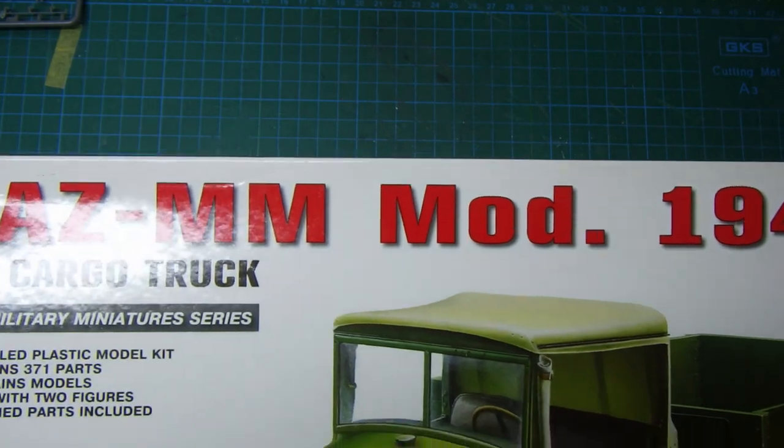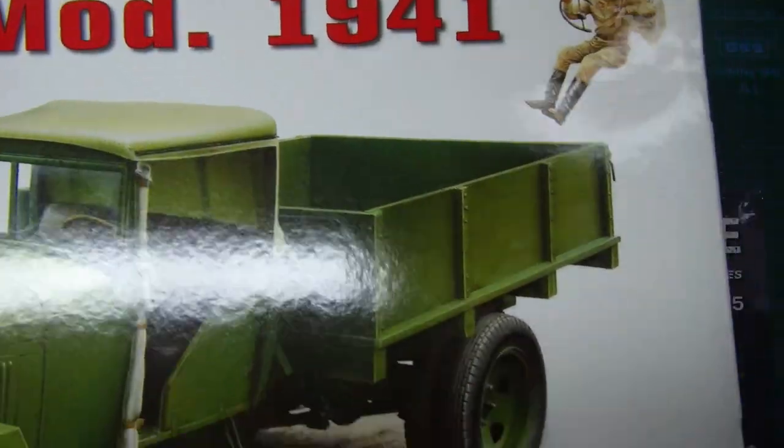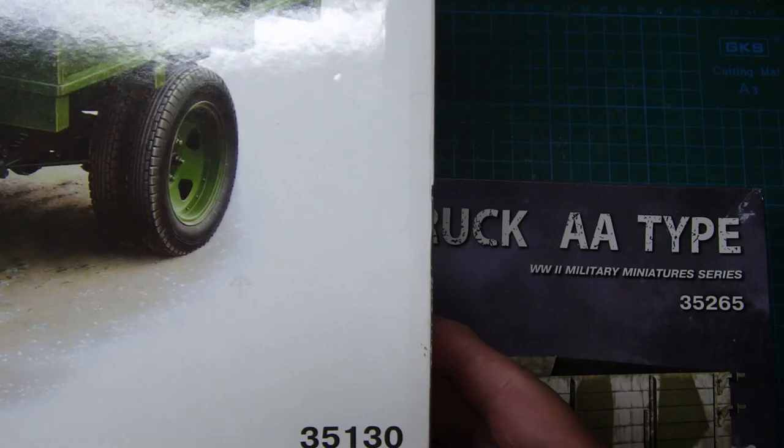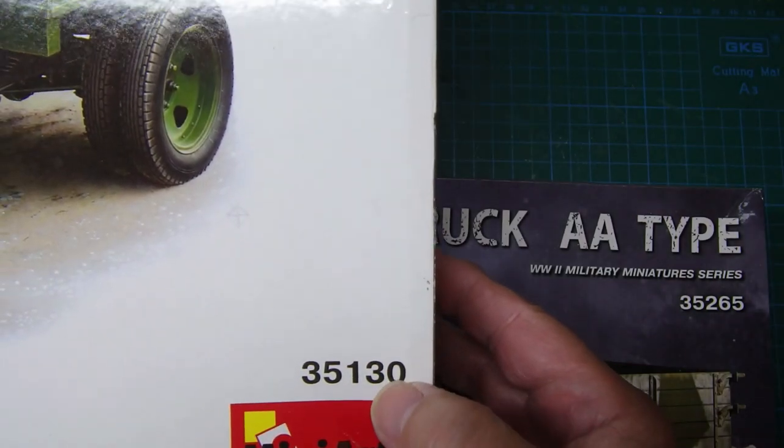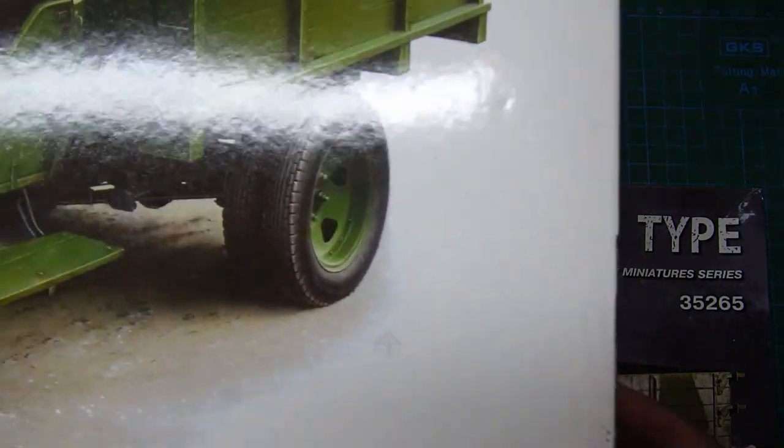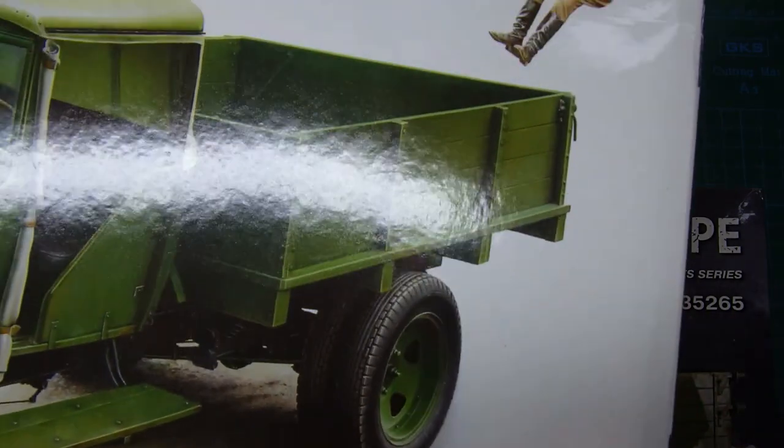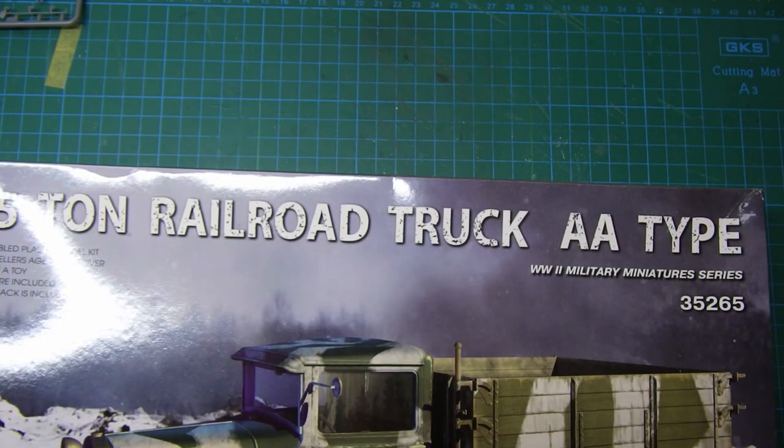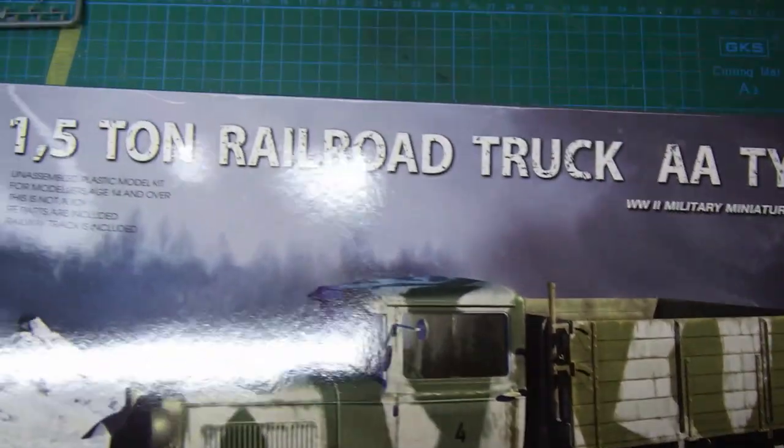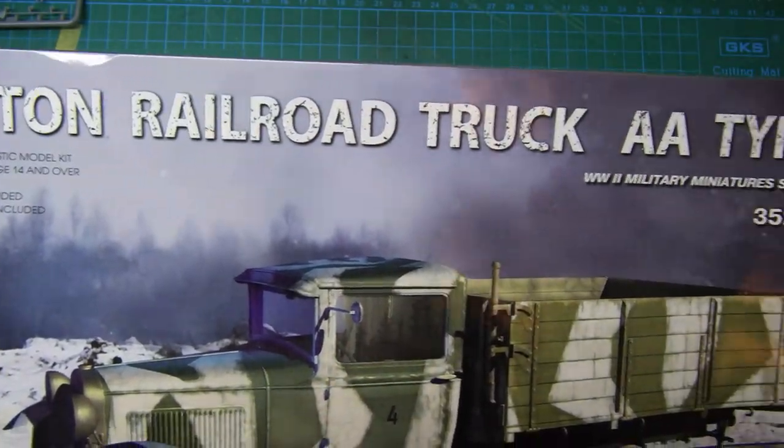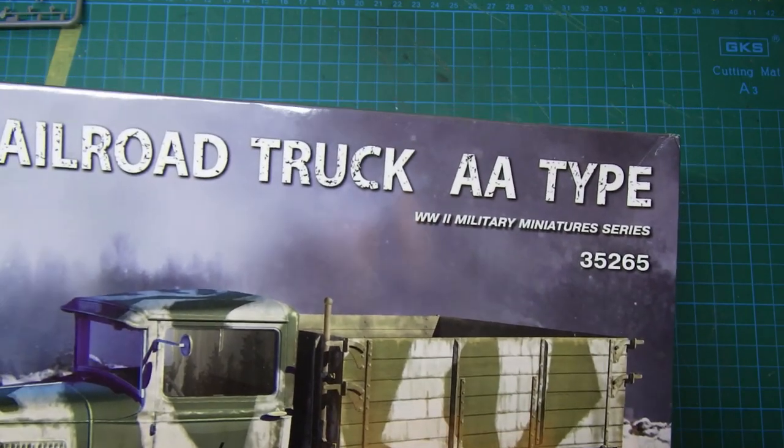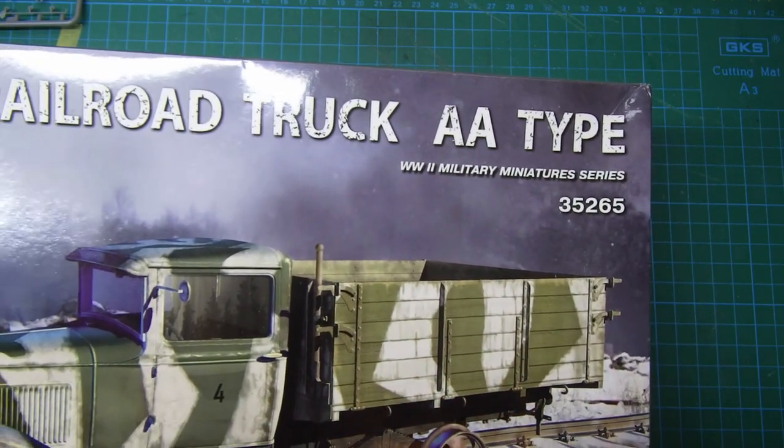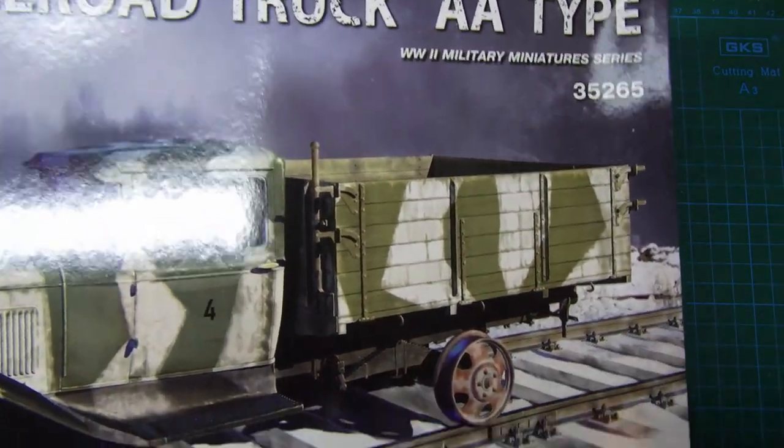This is the Gaz MM Mod 1941 truck. It's kit number 35130. And the same error is in the drawings and the instructions. And I looked at this kit, the 1.5 tonne railroad truck AA type. This is kit number 35265.